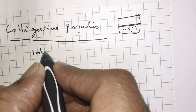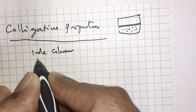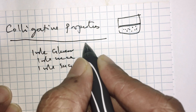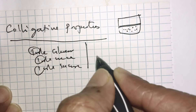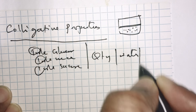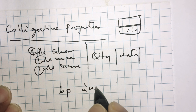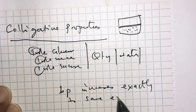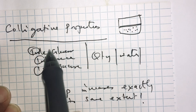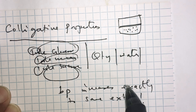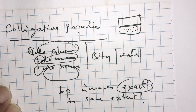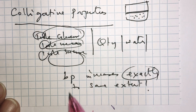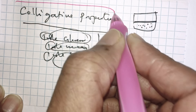For example, if I dissolve one mole of glucose, or one mole of urea, or one mole of sucrose — whatever I dissolve — as long as it is one mole in a fixed quantity of water, the boiling point of water increases exactly to the same extent. Addition of a non-volatile solute is increasing the boiling point, and I call this increment the elevation in boiling point. This elevation in boiling point is a colligative property.